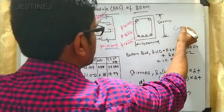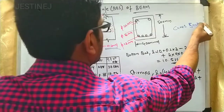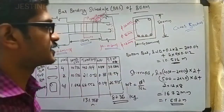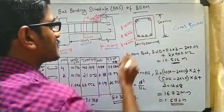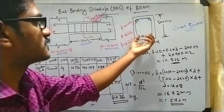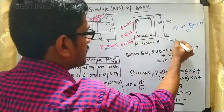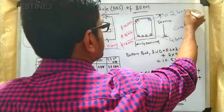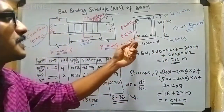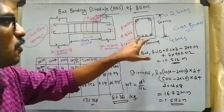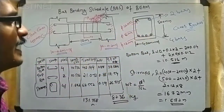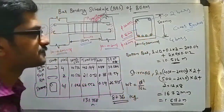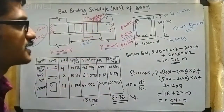Taking a cross-section of the beam, we can see the dimensions are 400 mm by 500 mm. At the bottom there are four bars, and at the top there are two bars. The diameter is given as 12 mm for both top and bottom bars, and the stirrups are given as 8 mm diameter.